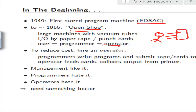He would be given the system and assigned some time — say one hour, two hours, or half an hour — and he had to do all the things himself. That's what is called the Open Shop.